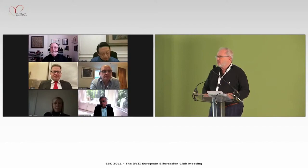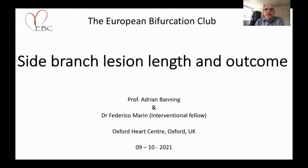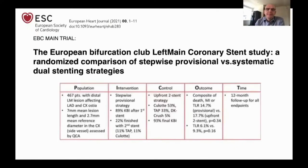Professor Adrian Banning from Oxford gives the final presentation of the EBC meeting 2021 on side branch lesion length and outcome from the ABC Main trial. The trial enrolled 467 patients with left main disease affecting both LAD and LCx. Mean side branch lesion length was 7 mm and mean reference diameter was 2.7 mm in the LCx by QCA. The trial compared stepwise provisional strategy against systematic two-stent strategy; one in five provisional patients required a second stent.